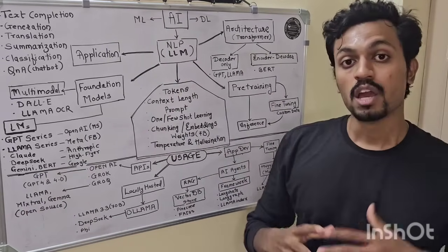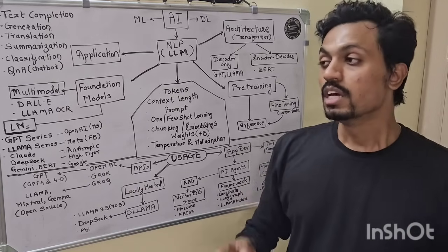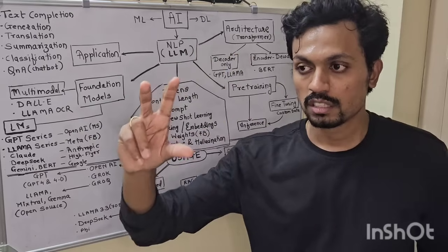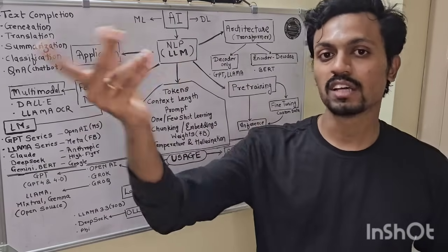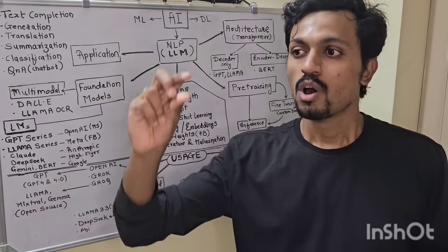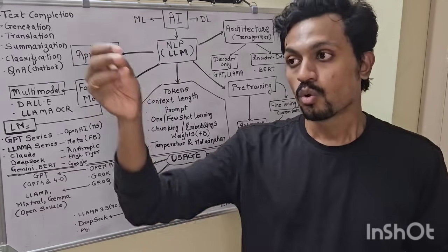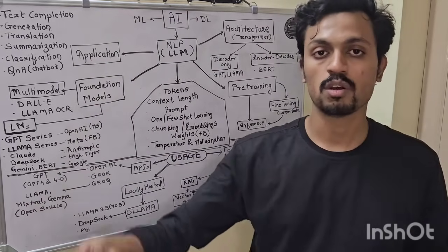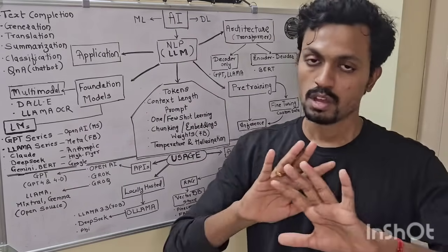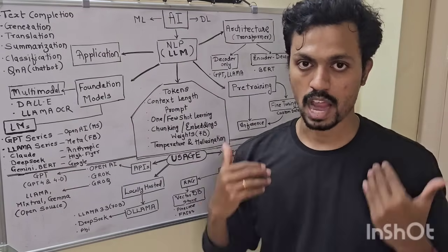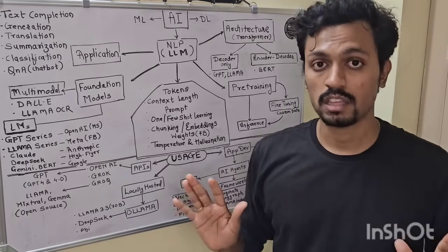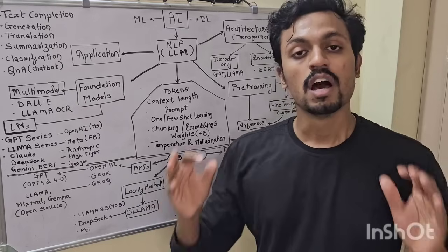Then comes few-shot and one-shot learning. Zero-shot is simple inference — you ask a question and get an answer directly. In few-shot learning, you give the model two or three examples before asking your question, which guides its answer. One-shot learning means you give just one example. Note: the model does not actually learn during this process — it's called 'learning' but the weights are not updated.